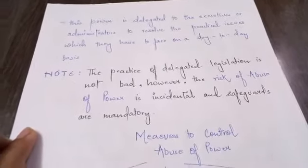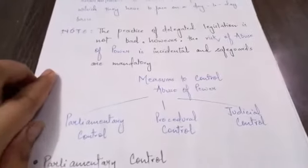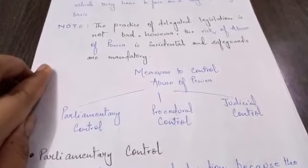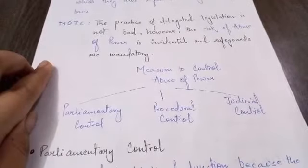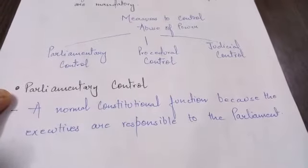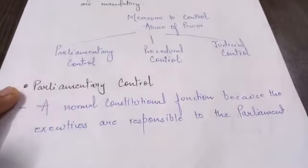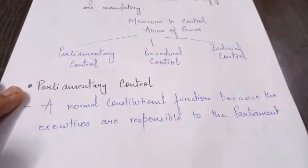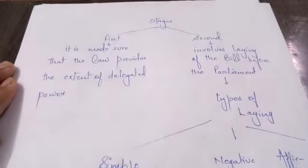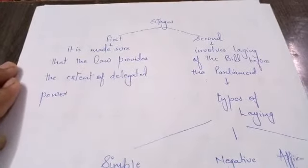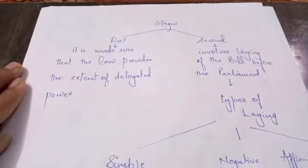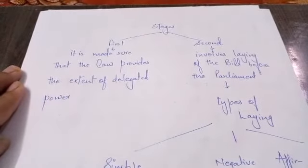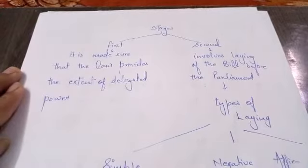The safeguards to control abuse of power are: first, parliamentary control; second, procedural control; and third, judicial control. Parliamentary control is a normal constitutional function because all executives are responsible to the parliament. Parliamentary control has two stages: first, ensuring the law provides the extent of delegated power; and second, involving the laying of the bill before the parliament.